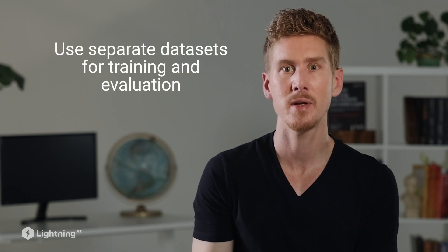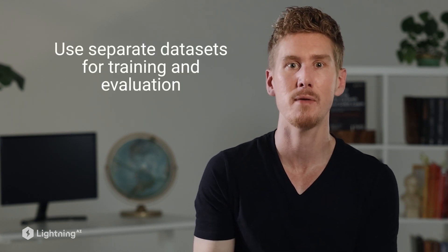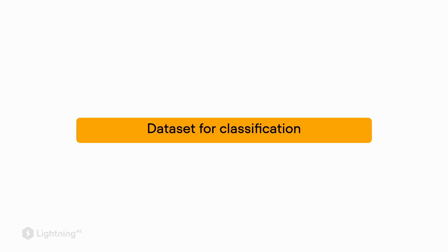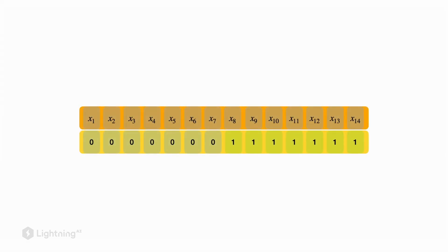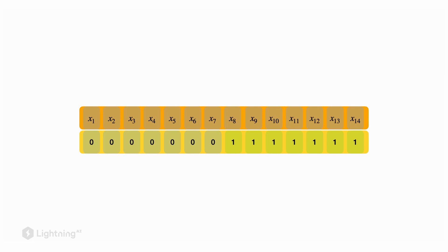One of the big fundamentals of model evaluation is to use separate datasets for training and evaluation. Consider we are given a training dataset for classification, and since it's a classification dataset, we also have the corresponding labels. To make this more concrete, consider this dataset where we have 14 training data points, and the first seven belong to class 0 and the second seven belong to class 1.